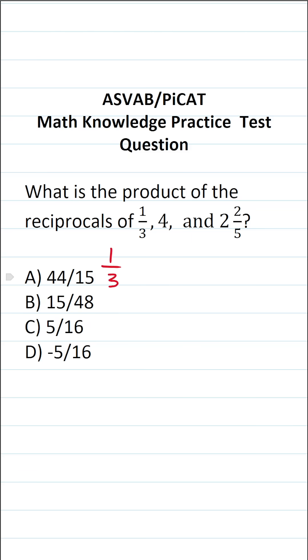So the first thing I'm going to do is write down the numbers that I'm given, notably one-third, four, and two-and-two-fifths. The next thing we have to do is find the reciprocal of each of these respectively.